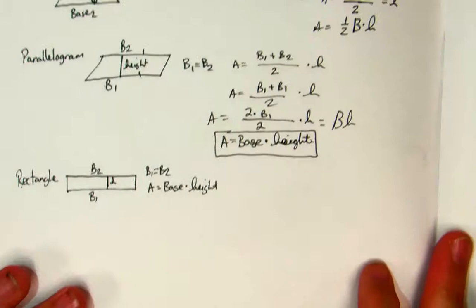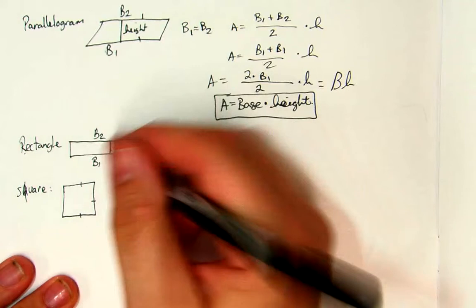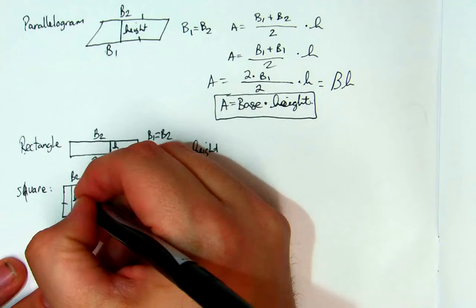A square. Now, we know all sides are equal. This is base 1, this is base 2. The height is equal to a base because they're all the same. So if my area is base 1 plus base 2 over 2 times the height.